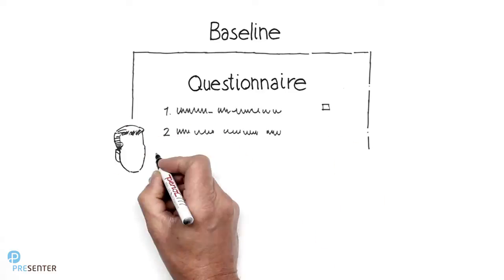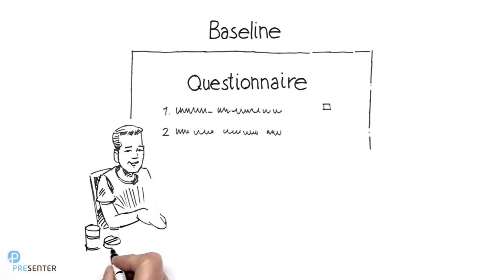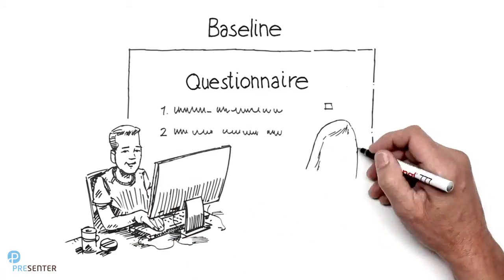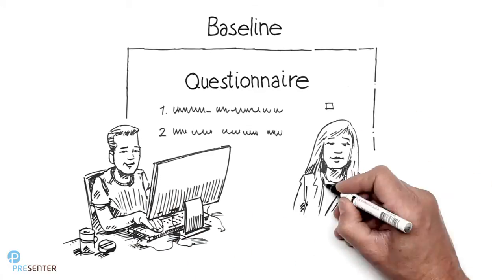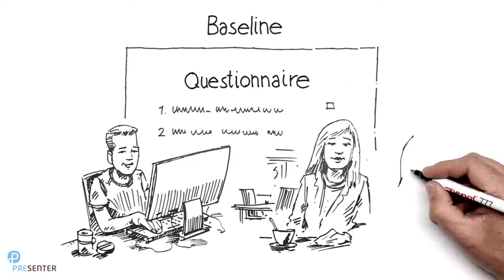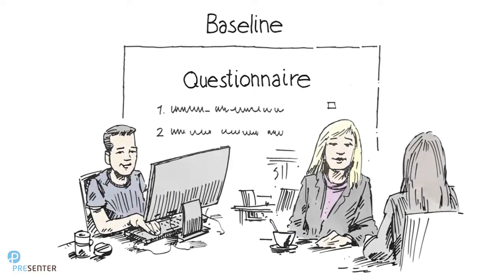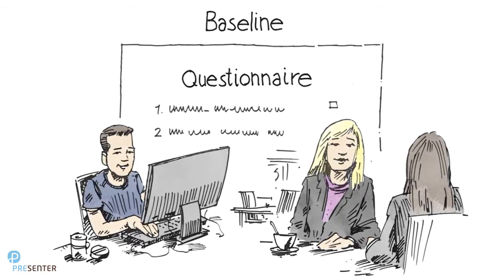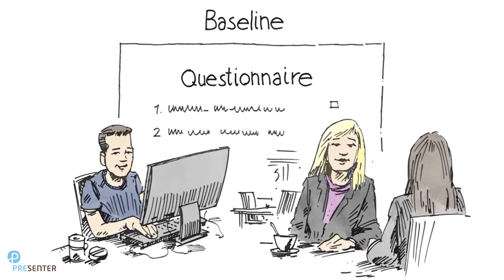The participants then receive a questionnaire they fill out before the trial starts. In this way, we can identify the participant's current situation. We call this the baseline measurement. This is an important step, as we need to ensure that the intervention group and the control group are as similar as possible before the trial starts.